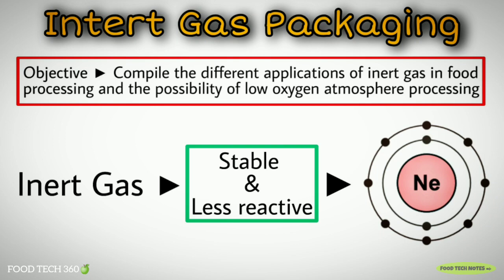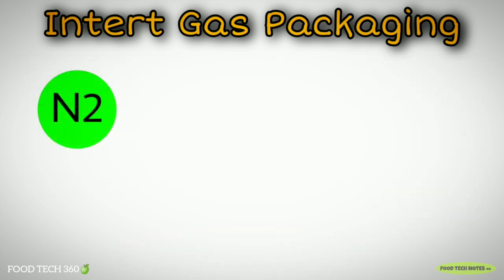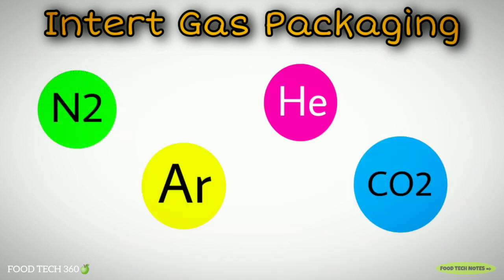Inert gases are used as a passive preservative, in contrast to active preservatives. Nitrogen, Argon, Helium, and Carbon dioxide are common components of inert gas mixtures and can also be used for special purposes.